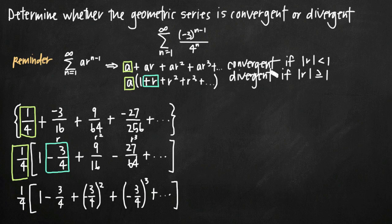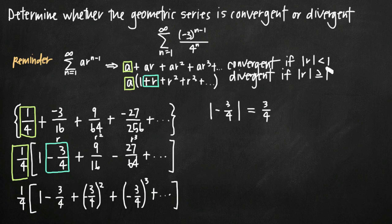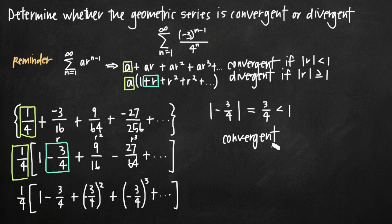Now for the convergence test, all we need to do is look at r. We take the absolute value of negative 3 fourths, which is positive 3 fourths. Is 3 fourths less than 1? Yes, of course it is. So because the absolute value of r equals 3 fourths, which is less than 1, the series is convergent by the geometric series test.